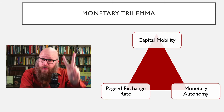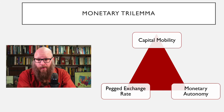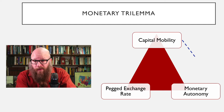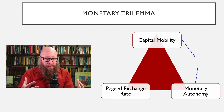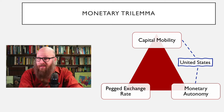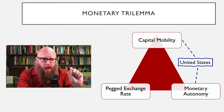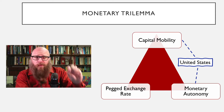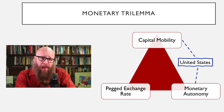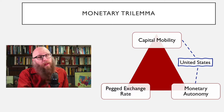A country can have two out of these three. For example, if you want free movement of financial capital as well as the ability for the central bank to help the domestic economy, you'll see something like we have in the United States. Notice in the US, we do not have a pegged exchange rate — the dollar is a floating exchange rate in the world's economy.